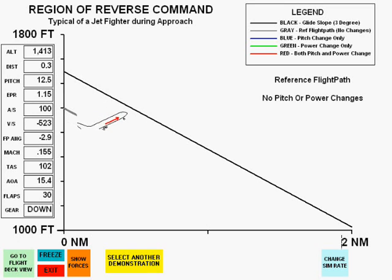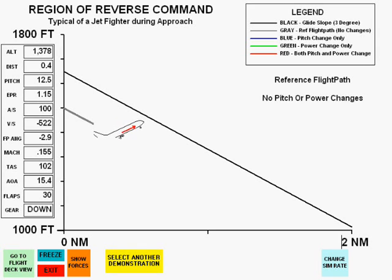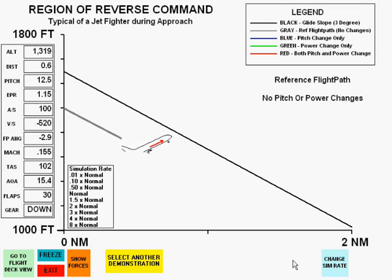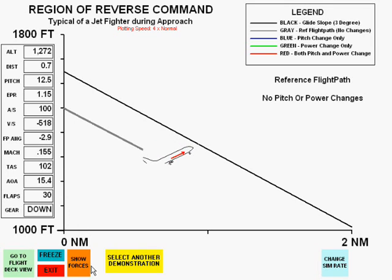The initial plot is parallel to the glide slope, and no pitch or power changes are being made. We will now increase the plotting rate to four times its normal value.